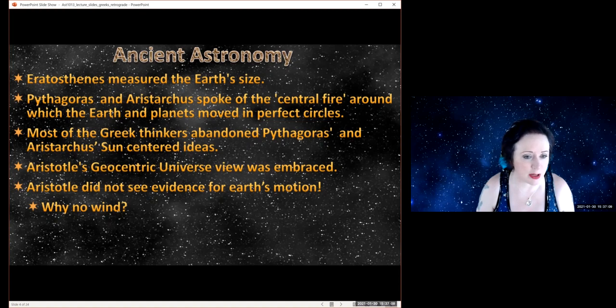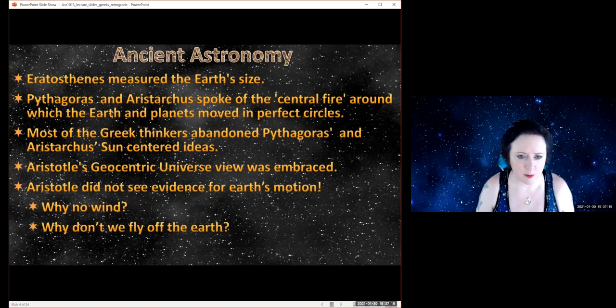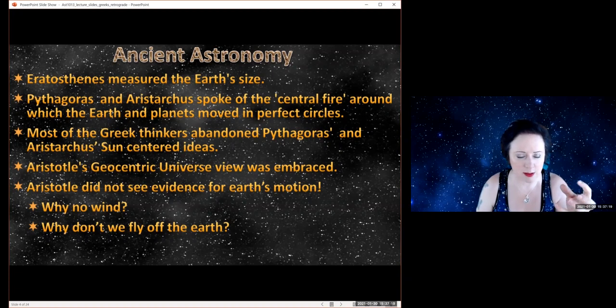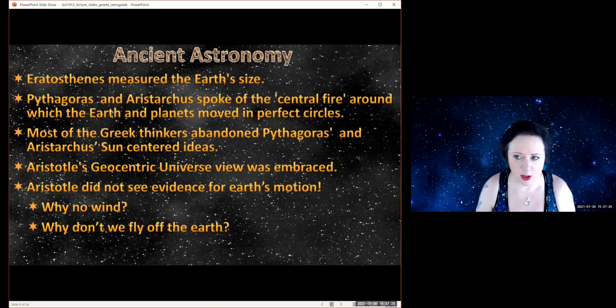He also was like, shouldn't we fly off? If you've got a ball covered in water and you spin it around, you're going to get lots of water droplets flying off in all directions. He was arguing that if the earth was really spinning, how would we stay on it? He had no concept of gravity. The reason we don't fly off is because gravity is holding us down to the ground. But nobody had come up with the idea of gravity yet, so it wasn't so silly. But one of the big ones was this idea that there's no parallax shift. So let's talk about what parallax is.